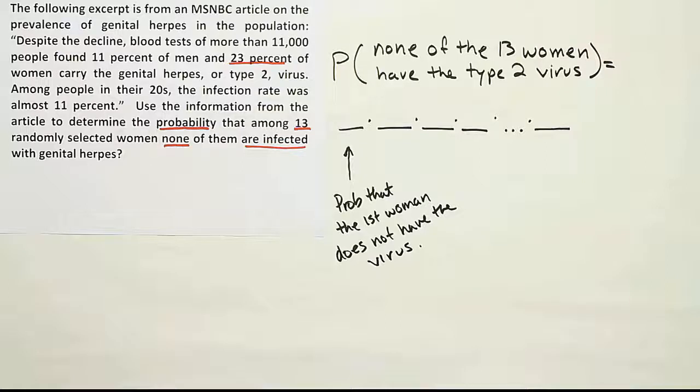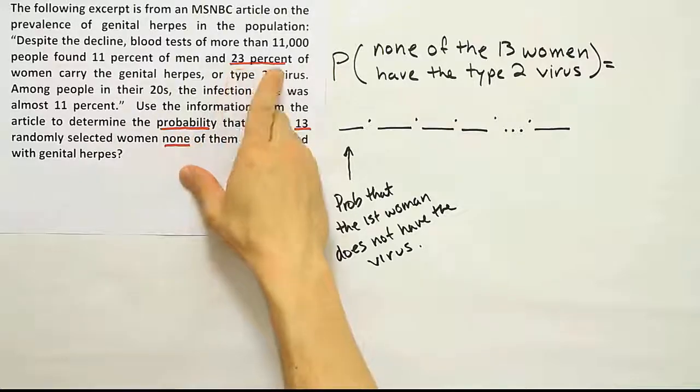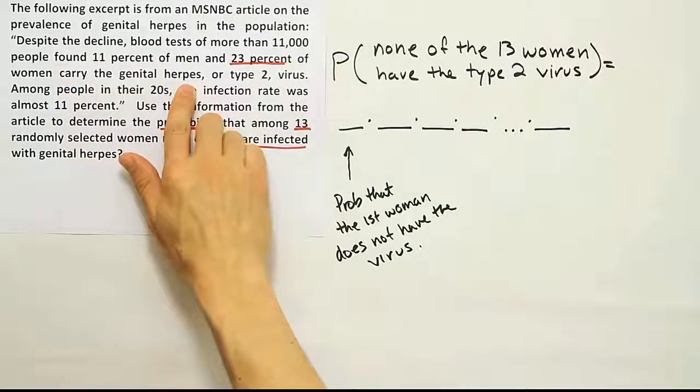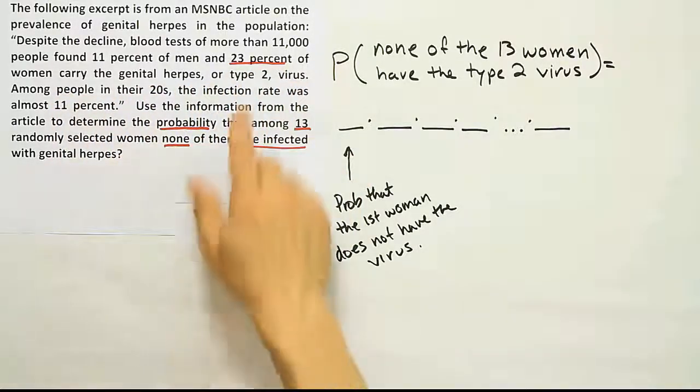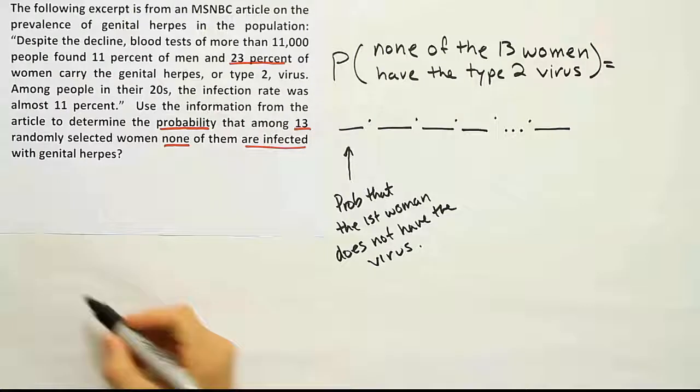Well, do we have that information in the problem somewhere? Well, you can see I underlined this number here because this said 23% of women carry the genital herpes or type 2 virus. So 23% have the virus, so 23% is the number that have the virus.